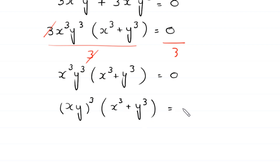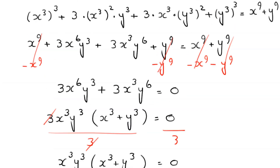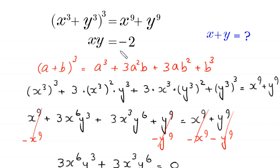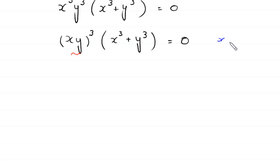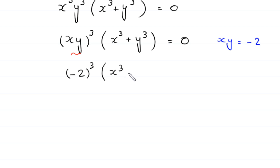Now we replace xy with its given value of -2. So this becomes (-2)³ times (x³ + y³) = 0, and (-2)³ = -8, giving us -8(x³ + y³) = 0.